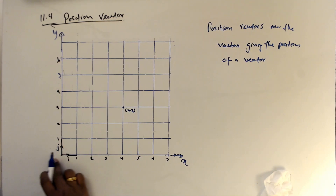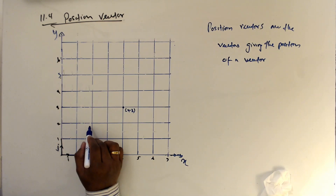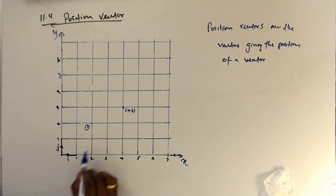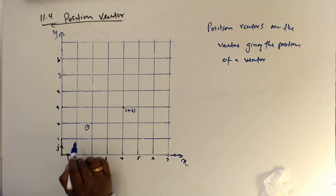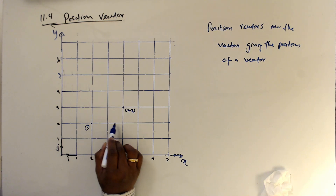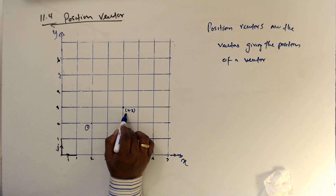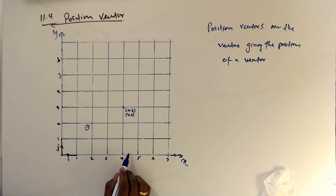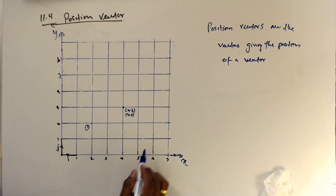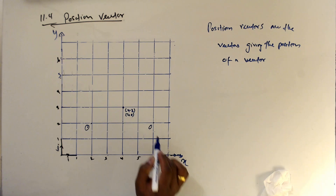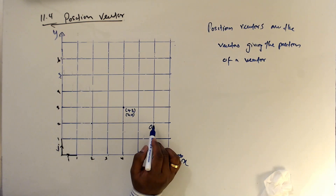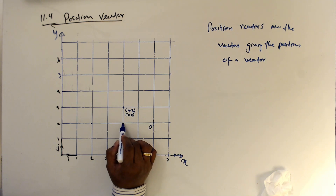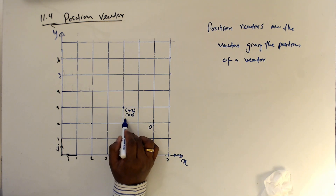What will happen if I take the origin here? This is O. Then what is the coordinate of this point? 1, 2 and 1 — so then it is going to be (2, 1). And if I take the origin here, then it is minus 1, minus 2, and 1 — so minus 2, 1.